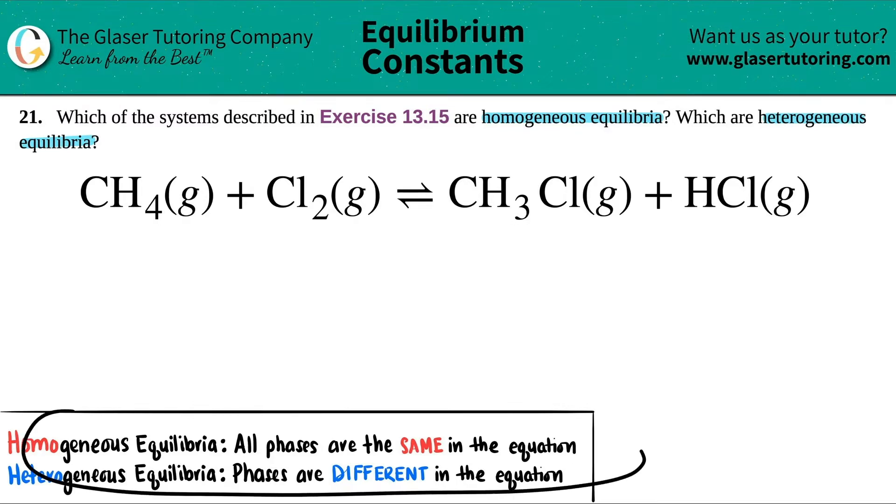Now here are the definitions. If you have a homogeneous equilibria, all phases are going to be the same. If you have a heterogeneous equilibria, the phases are going to be different. You're going to see a little difference in them.